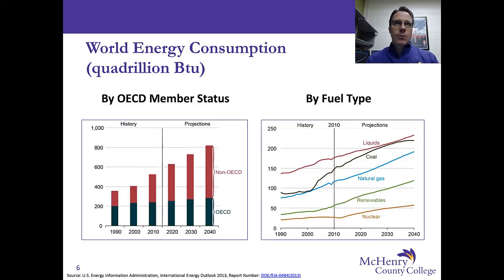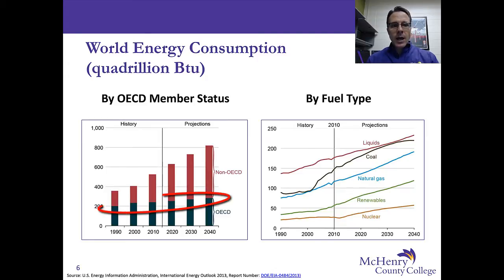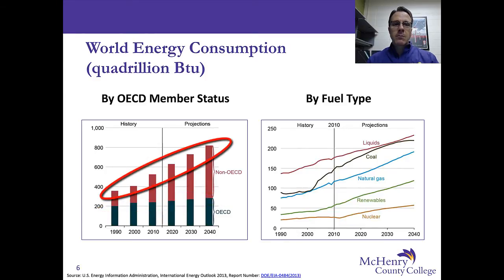You can shorten this down to say we're looking at energy consumption in terms of whether countries are developed or developing or somewhere in between. Notice that OECD countries from the 1990s through projections through the 2040s have a relatively modest growth in their energy consumption — it's not plateaued, but it's certainly not very steep. If you contrast this with the non-OECD countries, we see a much steeper projected growth, especially as the 21st century matures. This is where the energy consumption is expected to be the most intense.